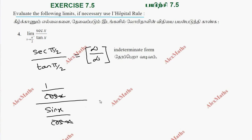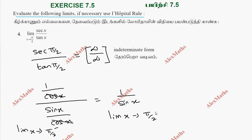After simplification, we get 1 over sin(x). So the limit as x approaches π/2 from the left — substituting, sin(π/2) is 1. The total answer is 1.